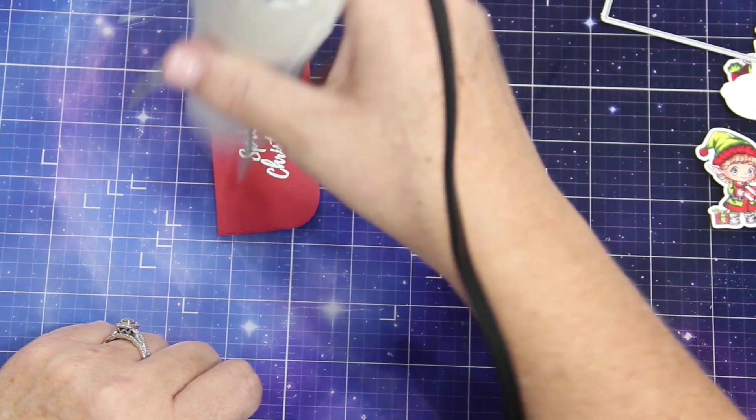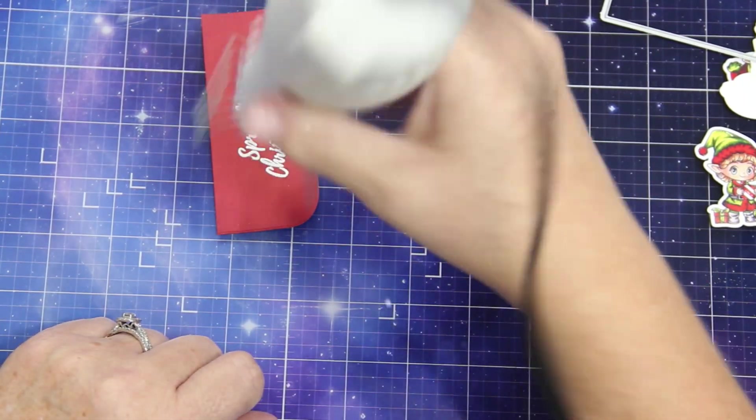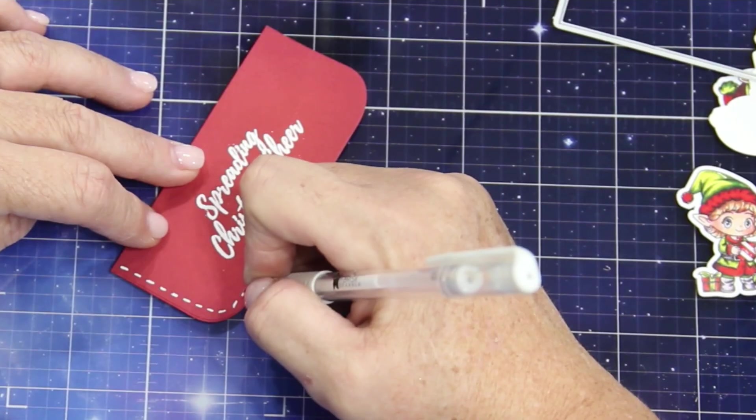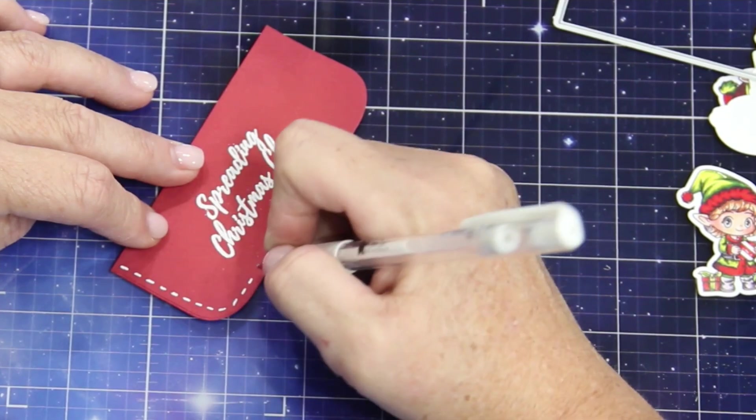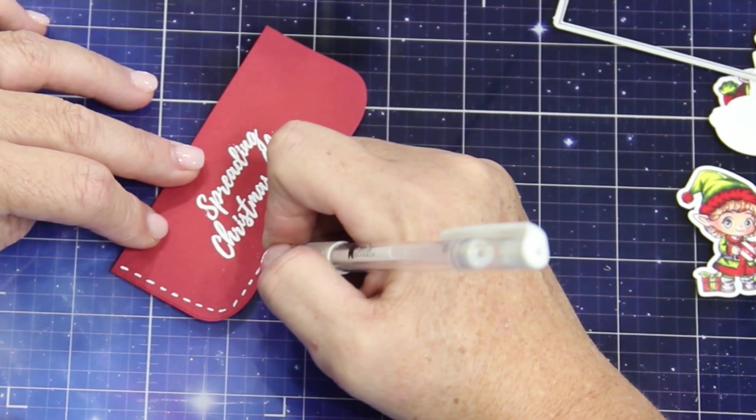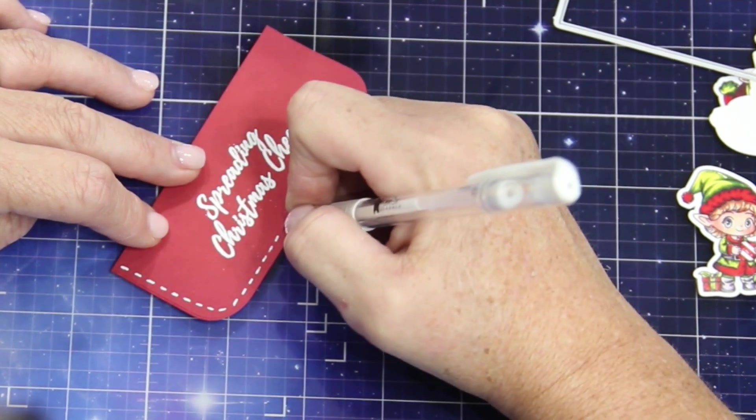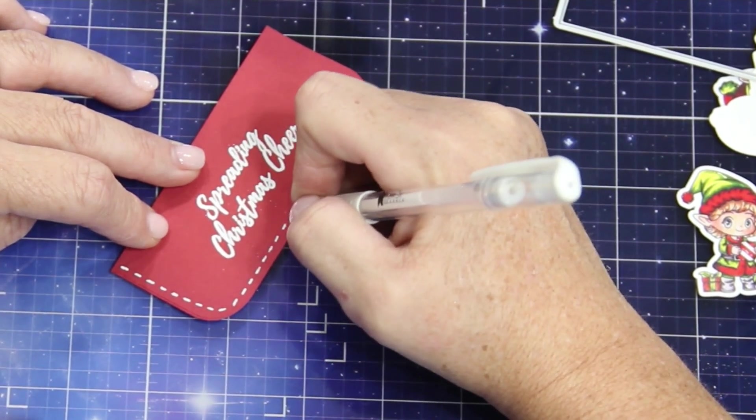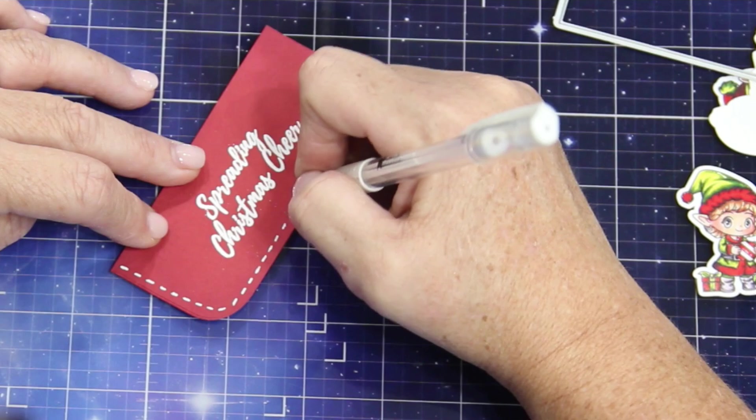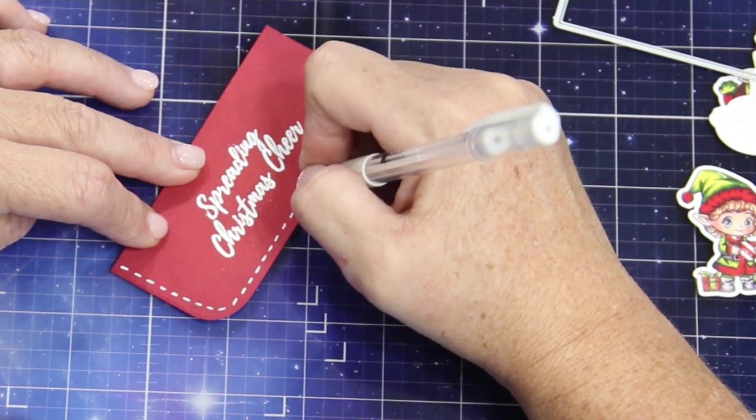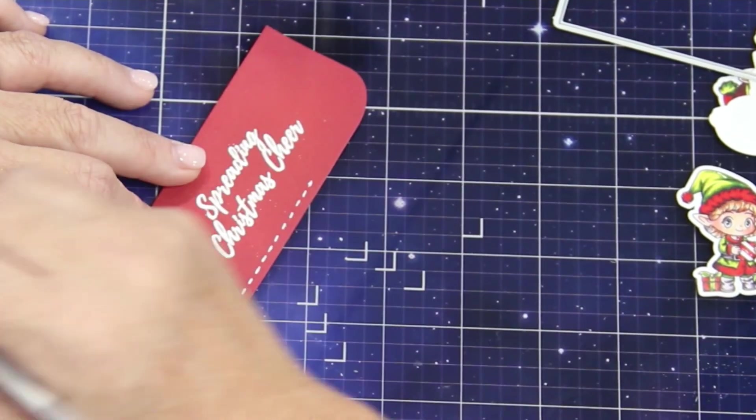And I then stamped the Spreading Christmas Cheer with VersaMark and embossed that in white. And I thought it would be fun to use a gel pen to add stitching. I like the extra things. I just think it gives it a little bit more of a wow factor, because I'm not putting an image on this one. Now, you can. You can do whatever you want. This is your card.